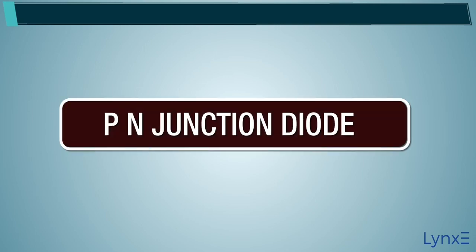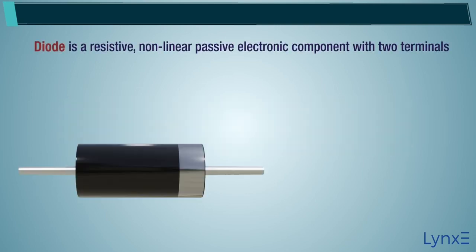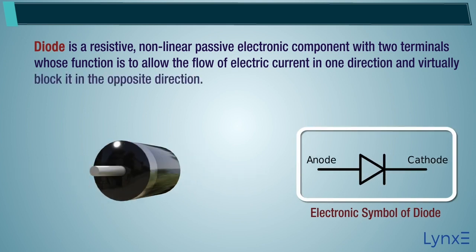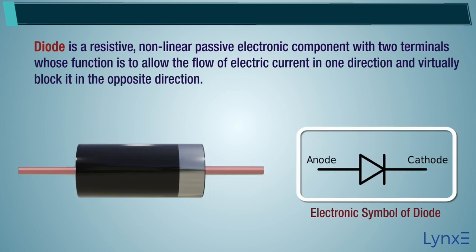PN junction diode. A diode is a resistive, non-linear, passive electronic component with two terminals whose function is to allow the flow of electric current in one direction and virtually block it in the opposite direction.